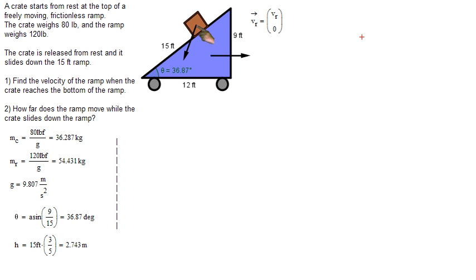Relative to an observer outside of this system, the crate actually moves at this slight angle, not down the face of the ramp. So you got to figure out what its components are.